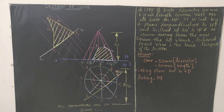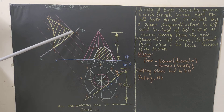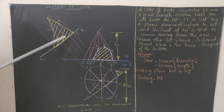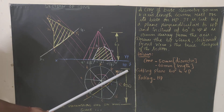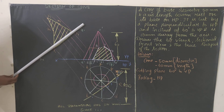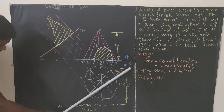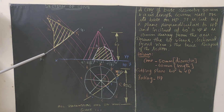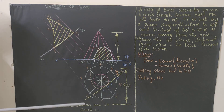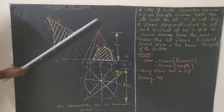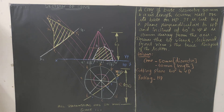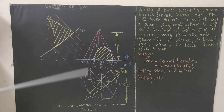Now I will explain how to draw the true shape of the section. Draw a new reference line X1Y1 parallel to the cutting plane. Move your scale parallel to the cutting plane and draw this new reference line away from both the front view and top view, as well as the original reference line XY. Try to draw it as parallel as possible to the cutting plane.